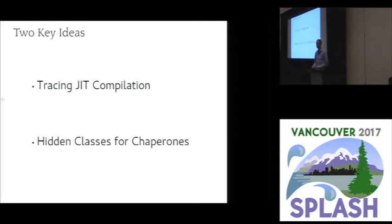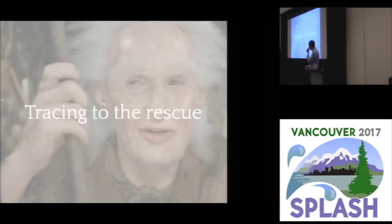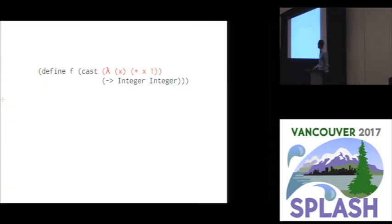So how do we make this happen? Two important ideas that I want to talk about. I'm going to focus on one of them today. You can read about hidden classes for chaperones. But the key idea is exploiting what's known as tracing just-in-time compilation, which we get by building on the PyPy language implementation framework. So how does tracing work?